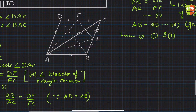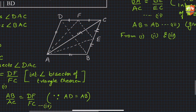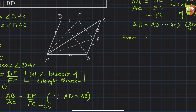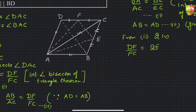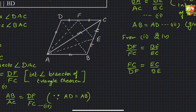From equations (2) and (4), the left-hand sides are the same, so the right-hand sides are also equal: DF/FC equals BE/EC. By reciprocating, we get FC/DF equals EC/BE.